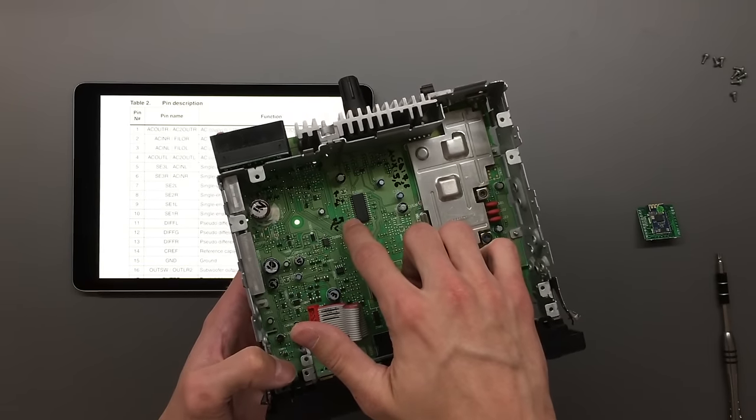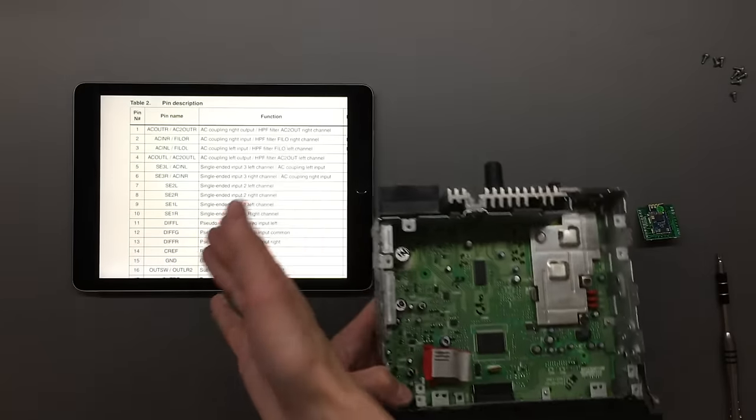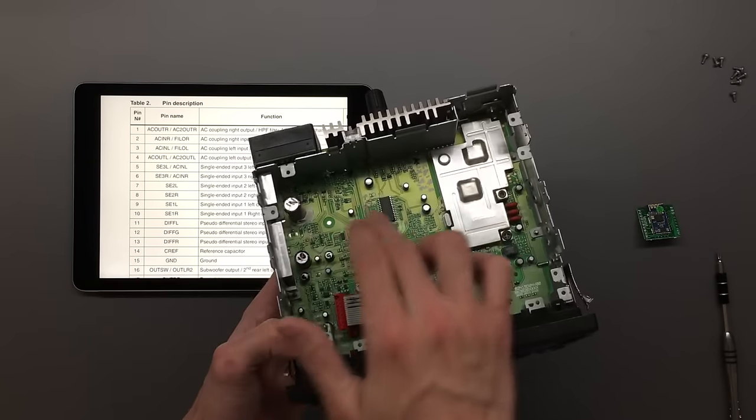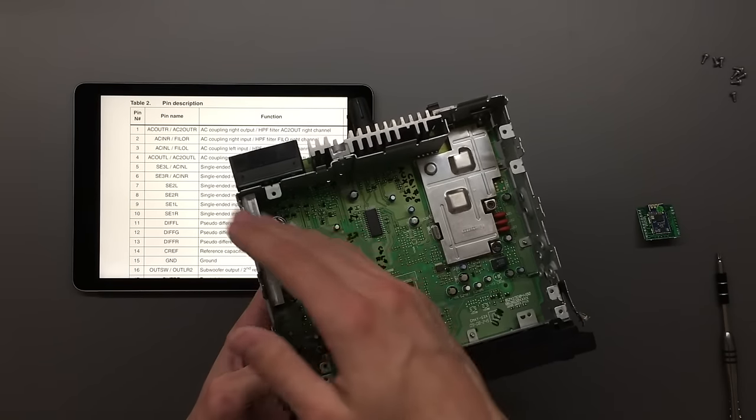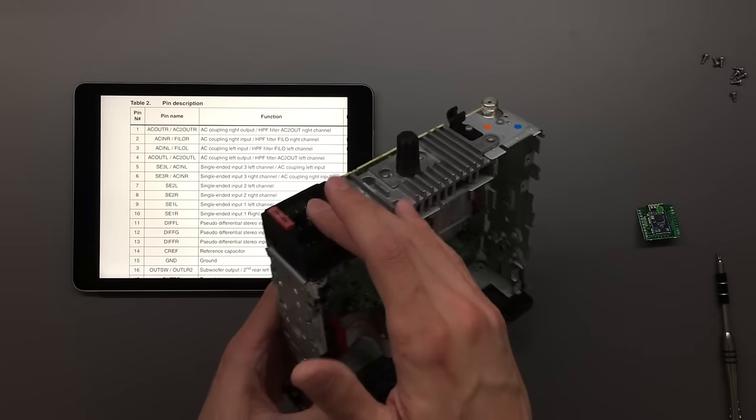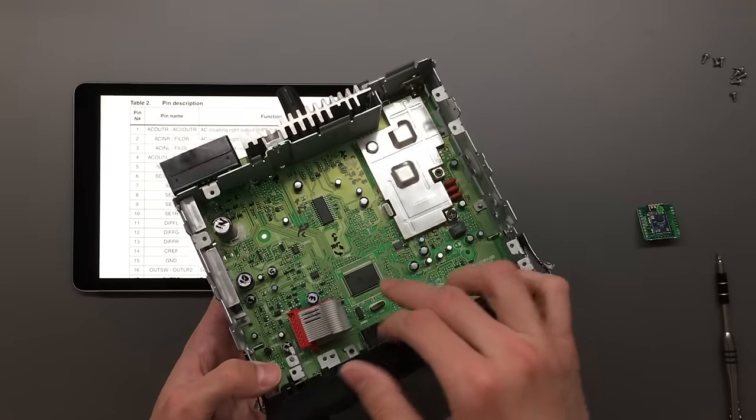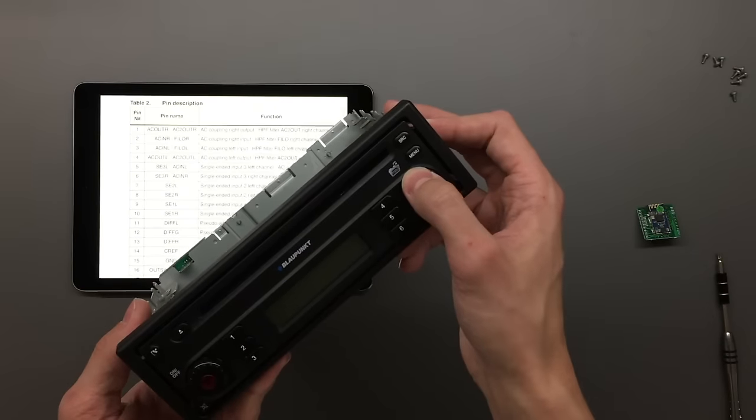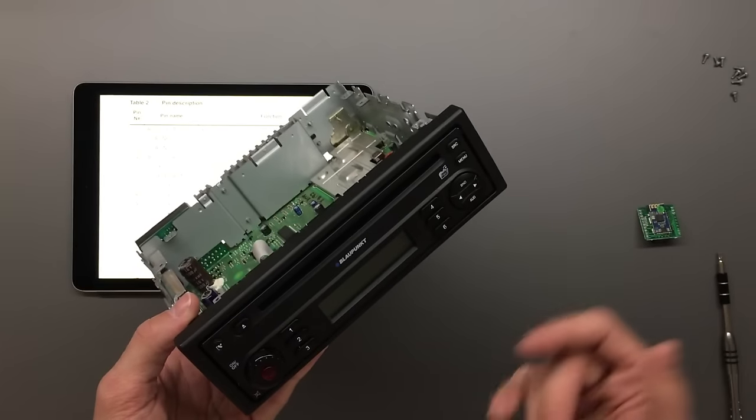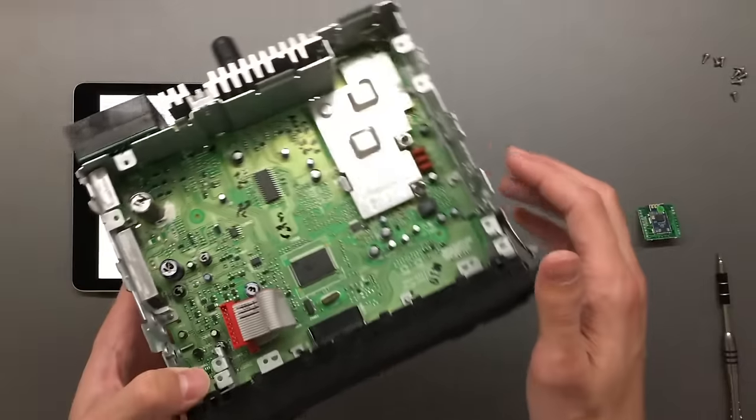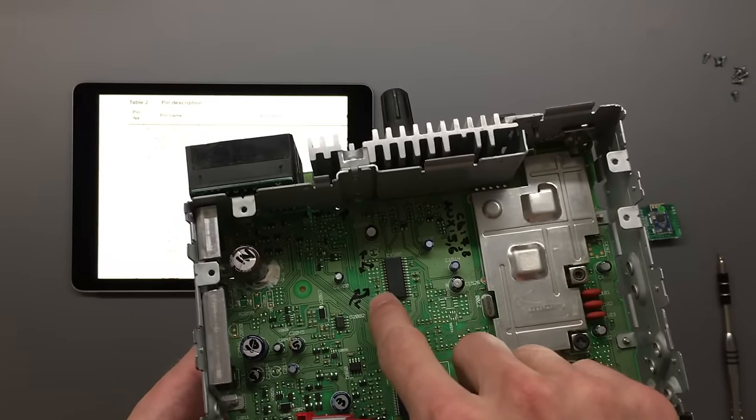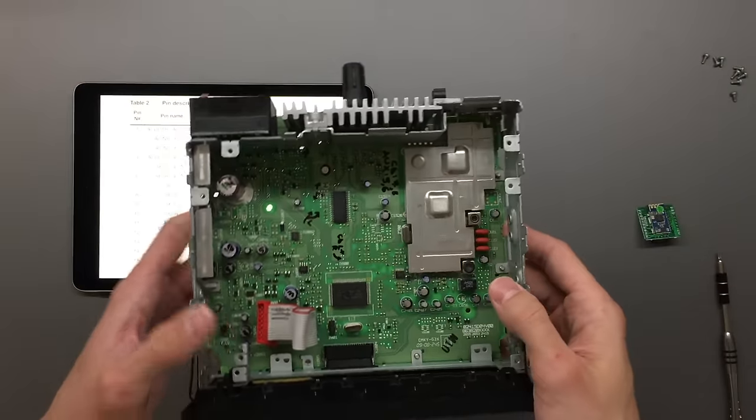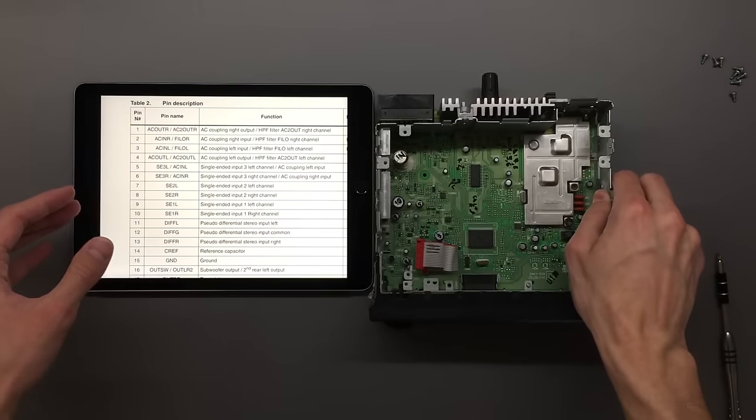You might be wondering why we're not using the aux-in. This chip has four inputs it can switch between. The problem is we can't really use the aux-in in the back, although that would be the most elegant way. We would need to somehow reprogram the microcontroller or find a way to select the aux-in.